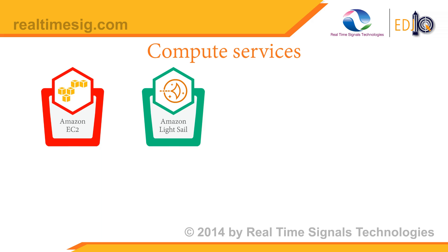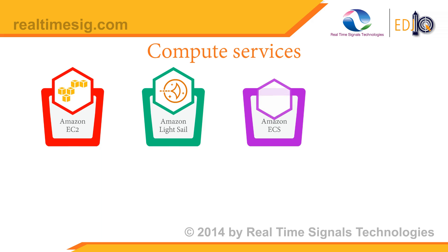The third service is Amazon ECS, Elastic Container Service — a highly scalable, fast container management service that makes it easy to run, stop, and manage Docker containers on a cluster.